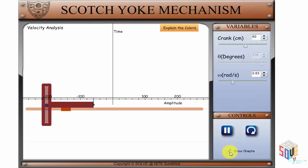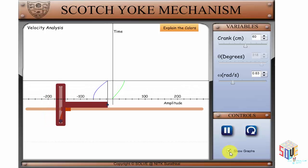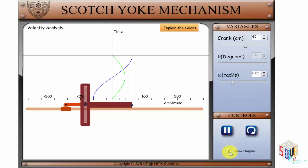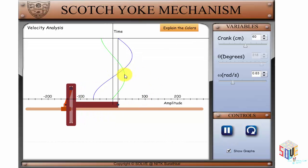And if you want to see the graph, click here and again, based on your angle, crank length, and angular velocity, the dynamic graph is plotted.